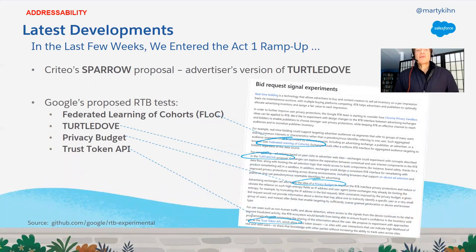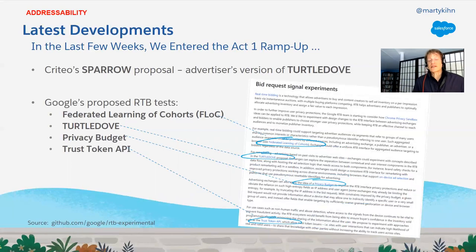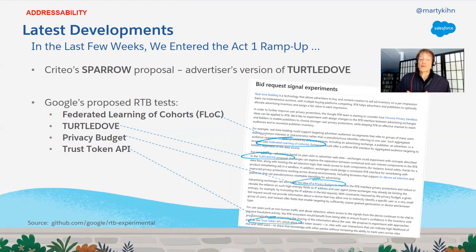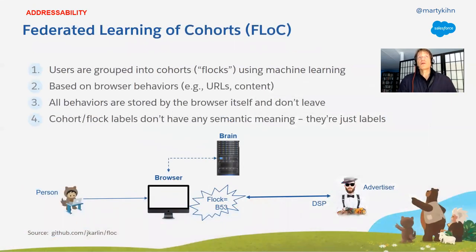More recently, in the last month or so, Google has announced certain experiments. Essentially four proposals in the sandbox were moved to the next level — still proposals, just trying to validate how they might work in the wild, particularly in a real-time bidding context. The two I want to talk about are Federated Learning of Cohorts (FLOC) and Turtle Dove, which is a retargeting method. The other two proposed were Privacy Budget and the Trust Token API, which are less relevant for ad targeting. Sparrow was something Criteo released — still being worked out and not being tested.